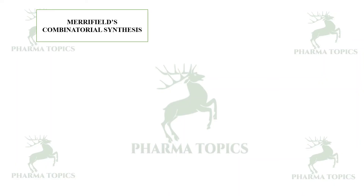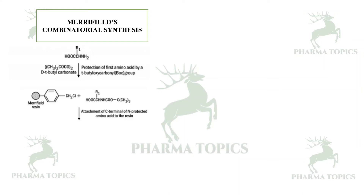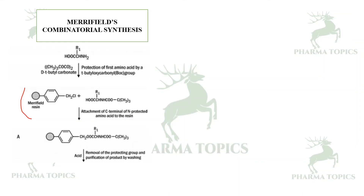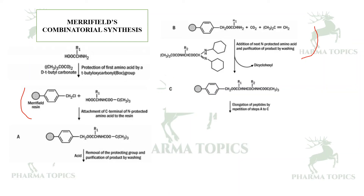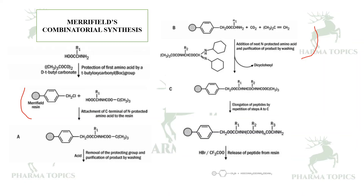Merrifield's combinatorial synthesis example: first, protection of the amino acid group with a butylcarbonyl group. Next, attachment of the C-terminal of the N-protected amino acid to the Merrifield resin. Then removal of the protecting group and purification by washing. Then addition of N-protected amino acid and purification by washing. The resin remains attached throughout. Elongation of the peptide occurs by repetition of these steps, followed by release of the peptide from the main chain.